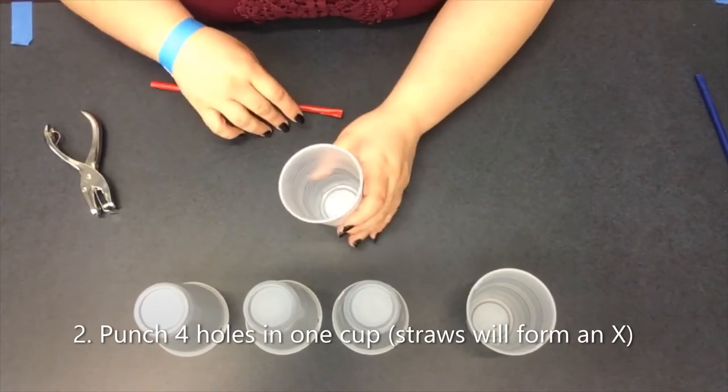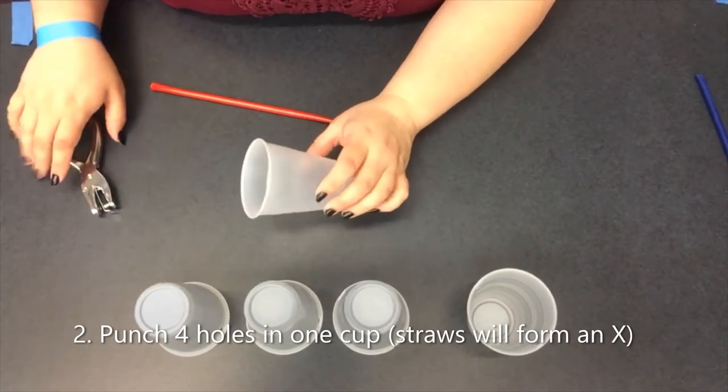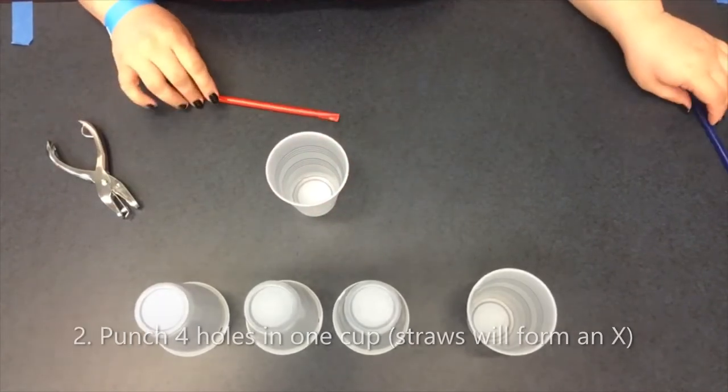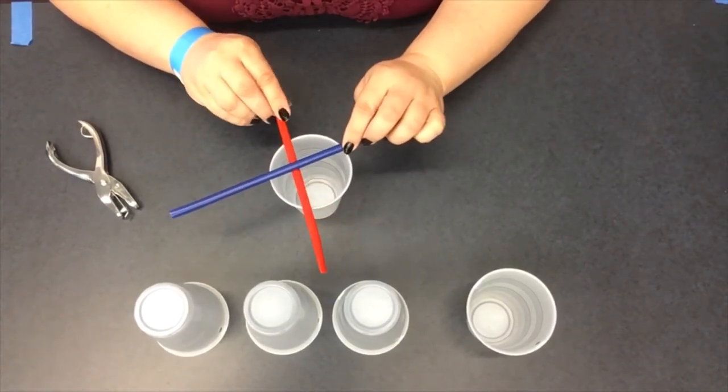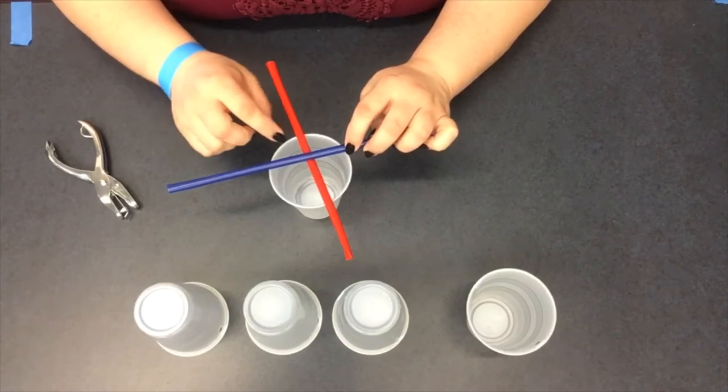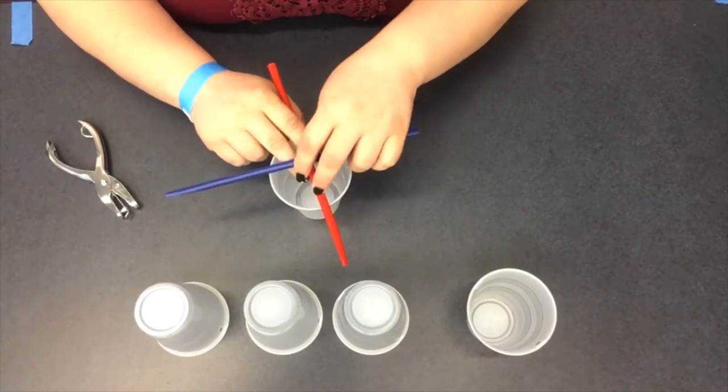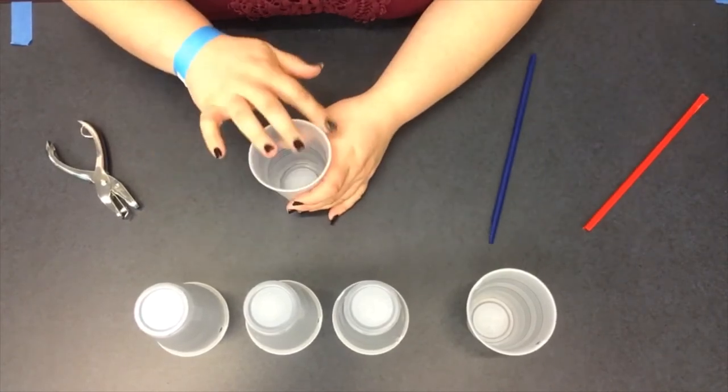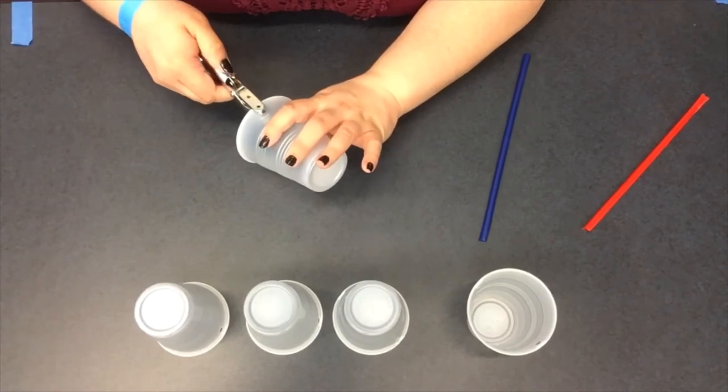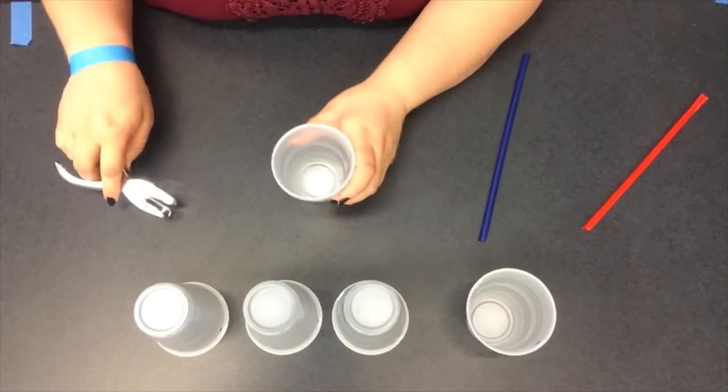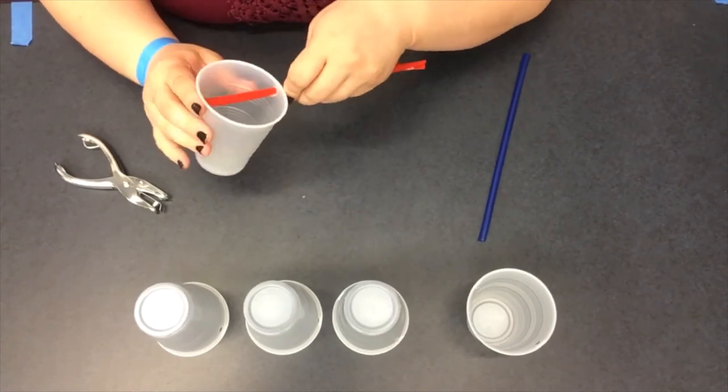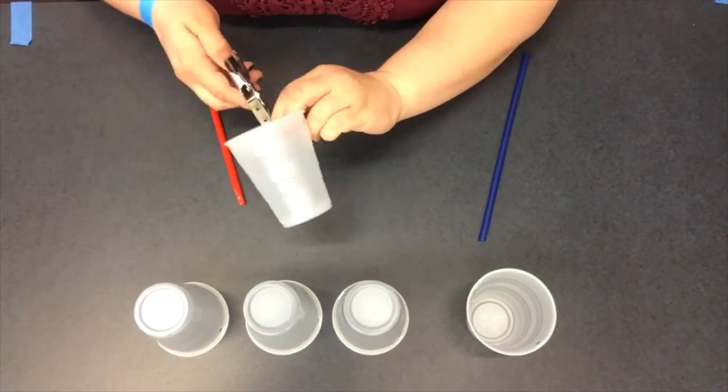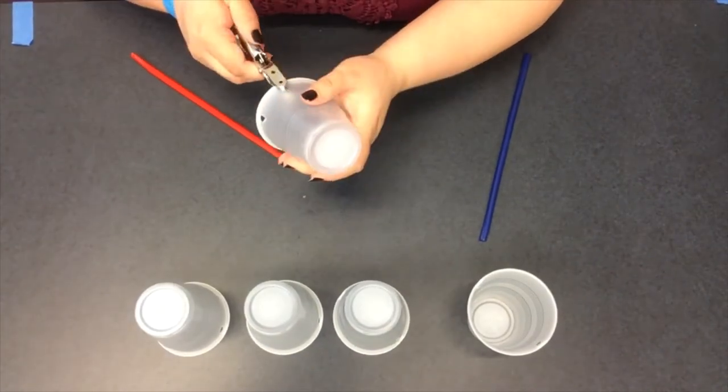Now that we've cut holes in our first four cups, we're going to cut the holes in our last cup. And for this one, we're going to want our straws to be able to go through them like a cross, like this. So we're going to punch four holes around the outside edges. One, two, three, four. And we can do the same thing that we did with the straws to make sure we get our holes in that spot.